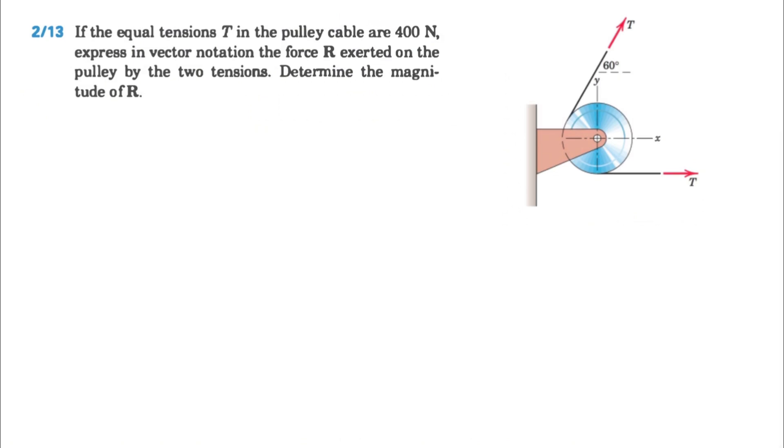the equal tensions T in the pulley cable, which is 400 N, and we need to express the resultant of these two tensions in vector notation on the pulley, and we need to determine the magnitude.